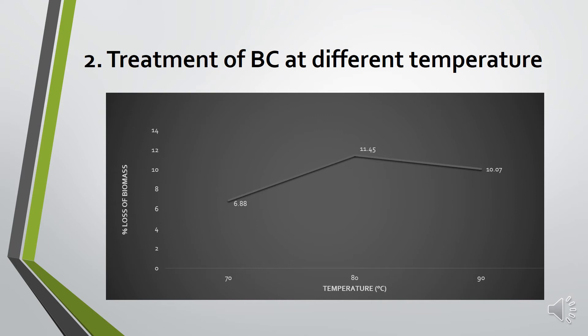Both 80 degrees C and 90 degrees C showed a high percentage of removal, which is 11.45% and 10.07% respectively. We chose 90 degrees C for the next method because the color of the BC pellicle is whiter compared to 80 degrees C.